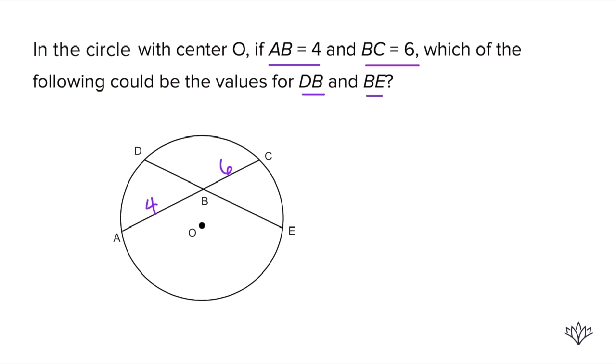When you have two chords that are intersecting, look at this now, DE and AC are intersecting, right? When you have two chords that are intersecting, the product, so when you multiply the pieces of those chords, those products have to be equal. Here's what I mean.